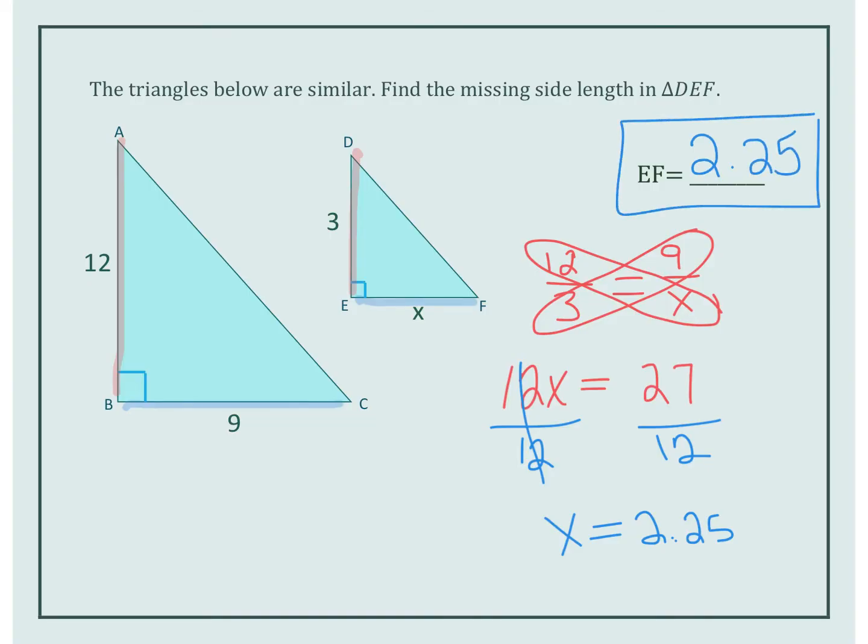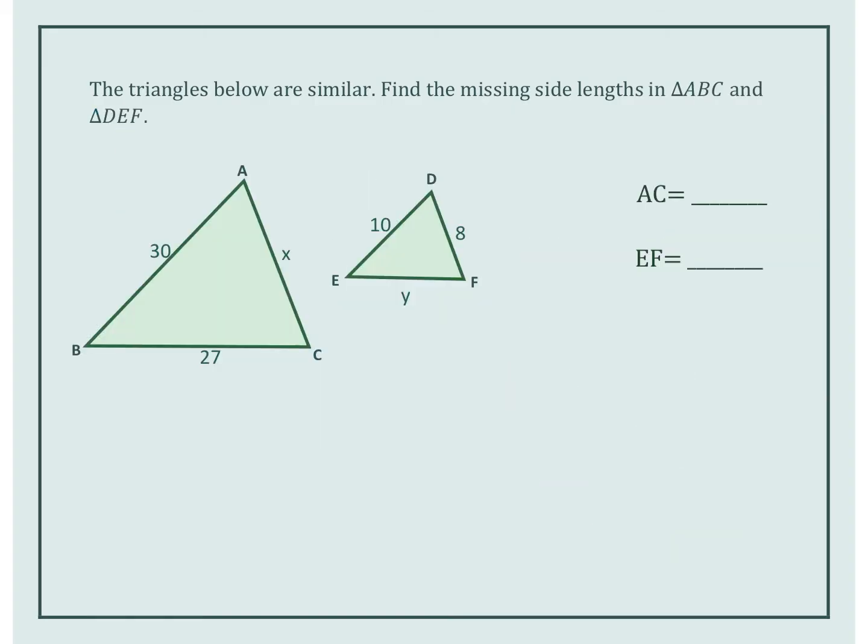Okay, let's try another one. The triangles below are similar. Find the missing side length in triangle ABC and DEF.